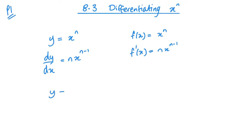Now, if I do have a number in front of my x, when I differentiate, my dy/dx becomes: I multiply by that power of n, so I end up with a multiplied by n, multiplied by x, and I take one away from the power. It's very straightforward.